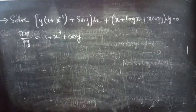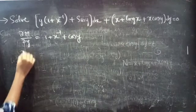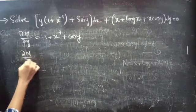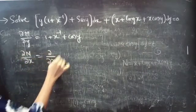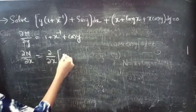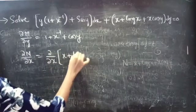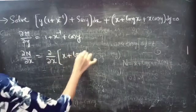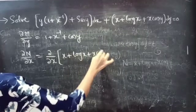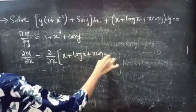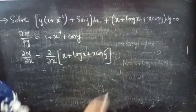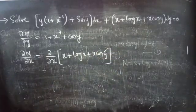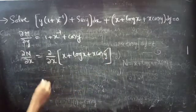Now we will find the partial derivative of N with respect to x. ∂N/∂x, where N equals to x plus log x plus x cos y. Here y is treated as constant, so cos y is a constant.